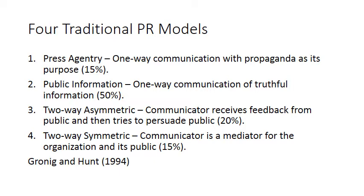There are four traditional PR models that have been studied. These four models were developed by Grunig and Hunt in 1994. The first and most simplistic model is called press agentry, and this is one-way communication with propaganda as its purpose. You might think, for example, of political organizations that give out information, some of which may not be truthful, but with the intention of persuading others.